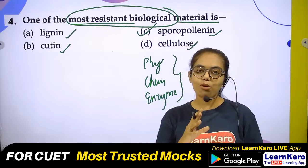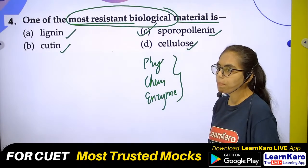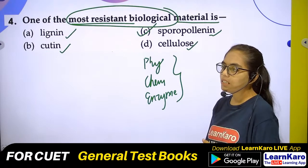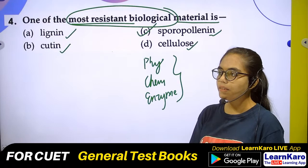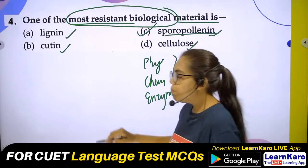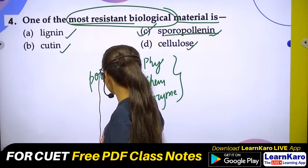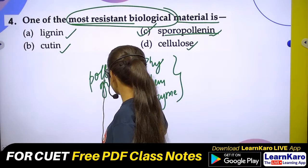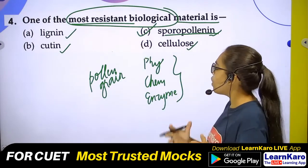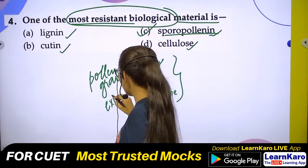If we talk about sporopollenin, where is it present? Sporopollenin is present in pollen grains — it is the most hard and most resistant biological material. The outer wall (exine) of pollen grains is made of sporopollenin.